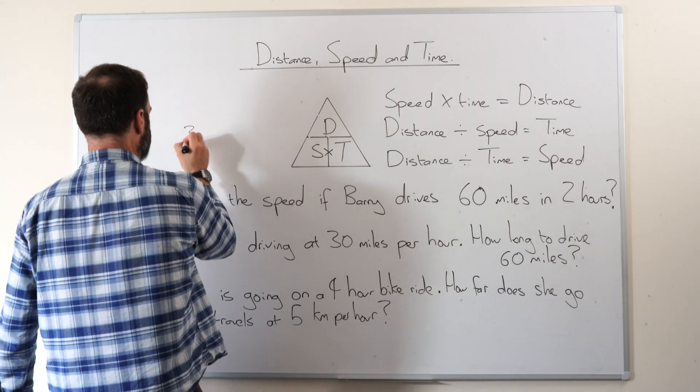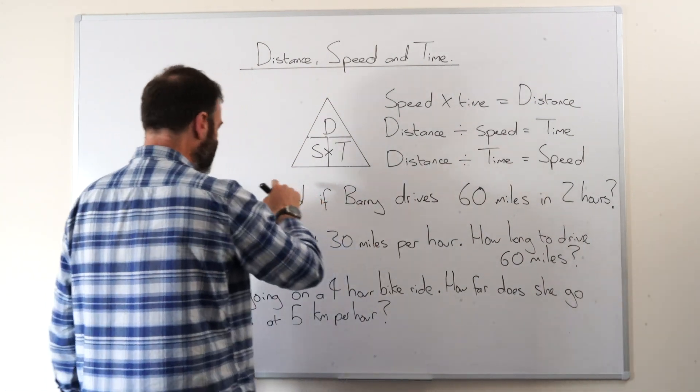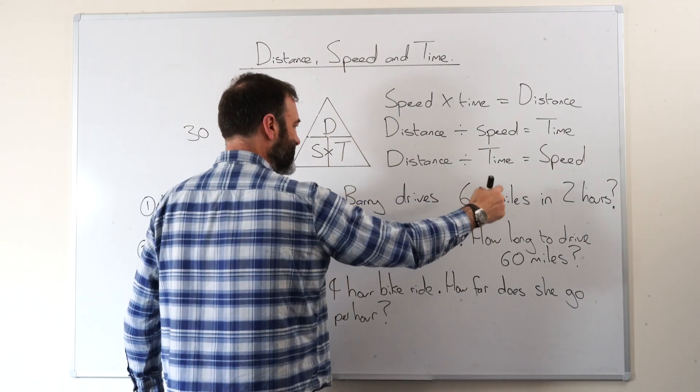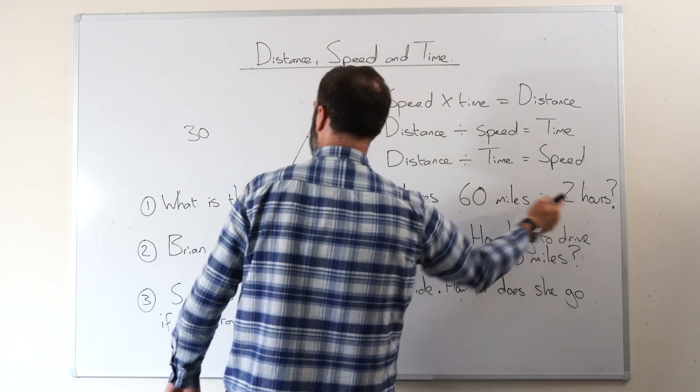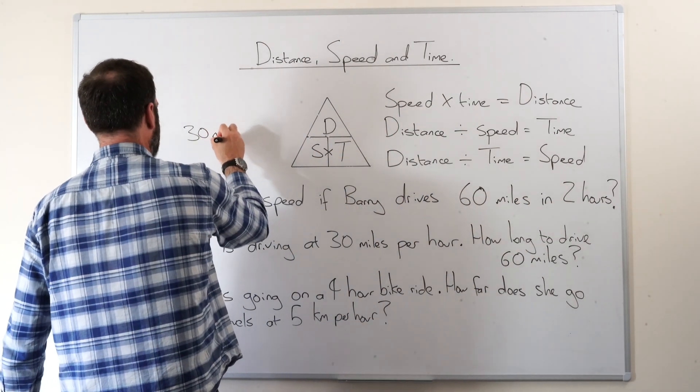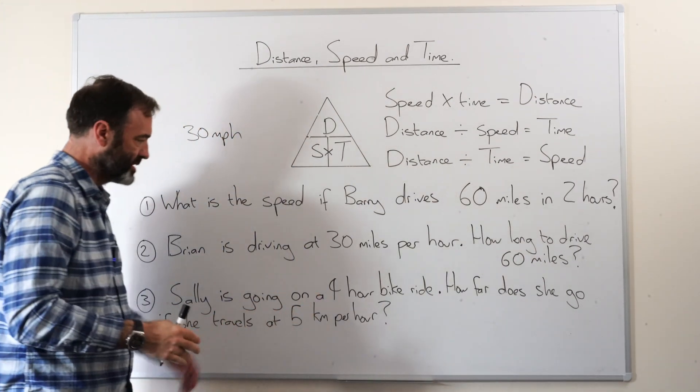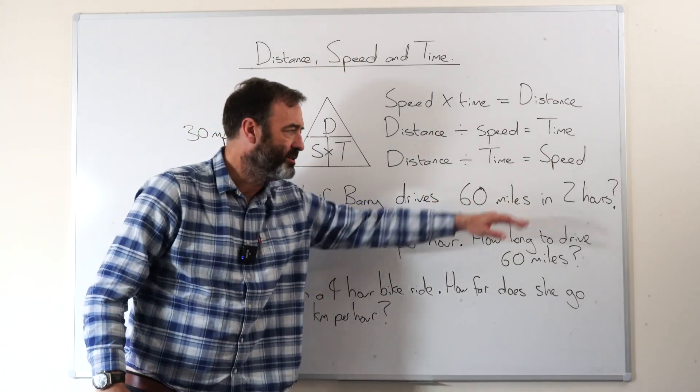Now the important thing to remember, kids sometimes get confused about this, is we use the units given to us in the question. So it's 30 miles per hour. Now that can be different for different questions. And I'll show you that here. But we must go over these units.